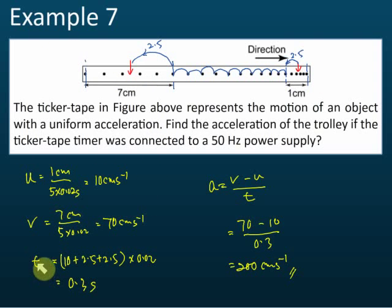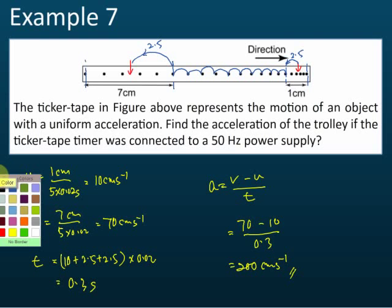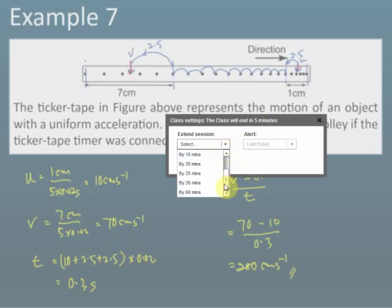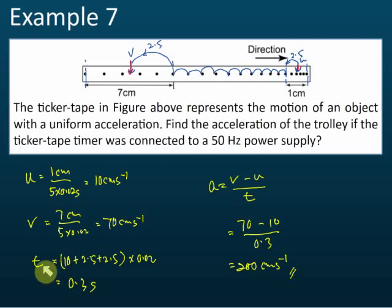t is the time taken from u to v — from the initial velocity to the final velocity. Here is your u, and this is where v is. As discussed, u and v are always in the middle of the length that we measure. So for the 1 cm segment, u is in the middle, and for the 7 cm segment, v is in the middle. The time taken is from u to v.